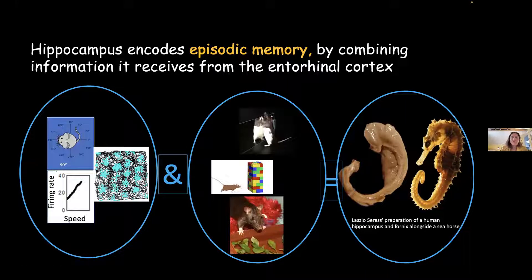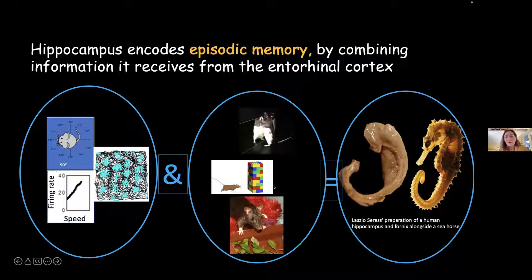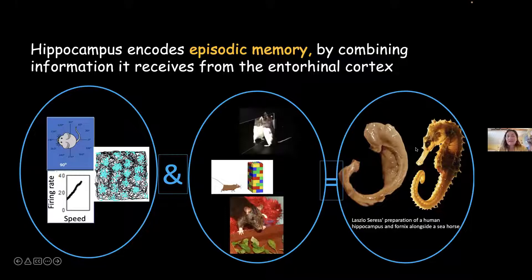What we conclude is that we have a system in the entorhinal cortex providing spatial input to the hippocampus — through grid cells, head direction cells, speed cells, and other cells. The hippocampus then combines this spatial information with other types of information, like odors. And out of this combination, we get episodic memory from the hippocampus.